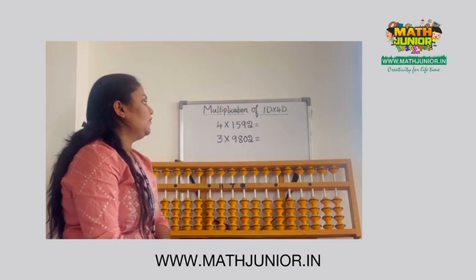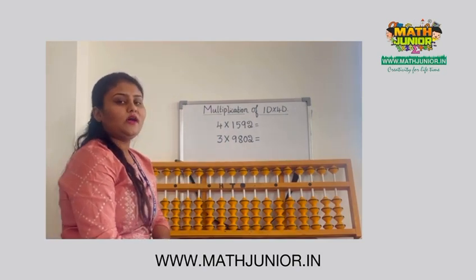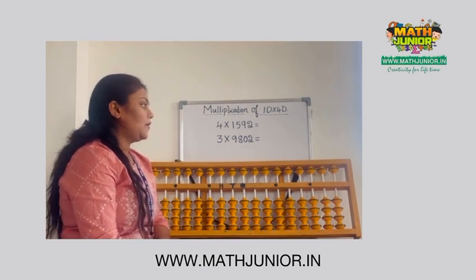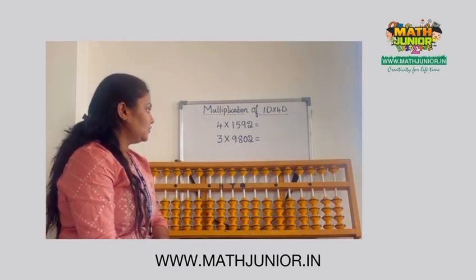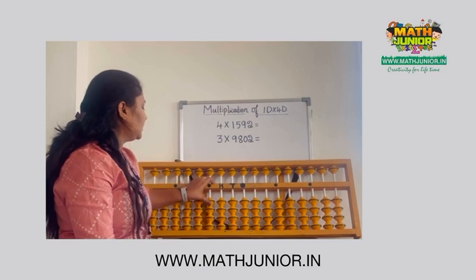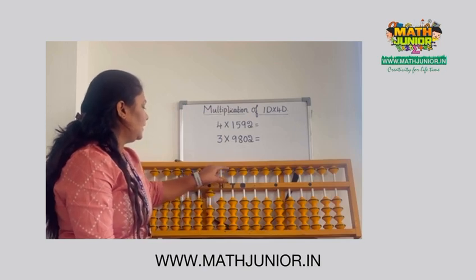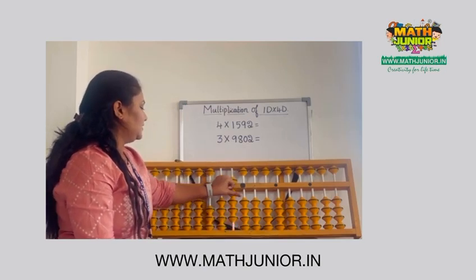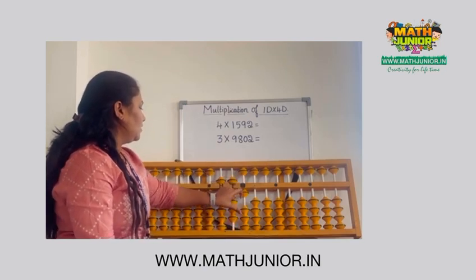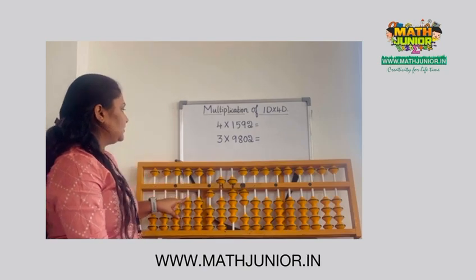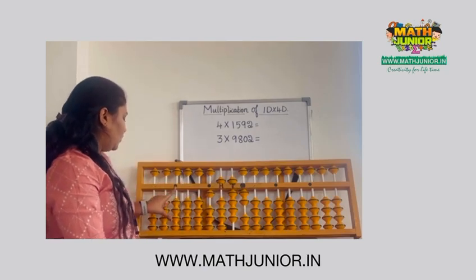The first question is 4 into 1592. First we have to place 1592 using 1100 terms and you need to place. Then skip 2 rods and place 4 here.